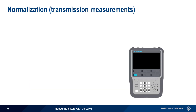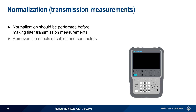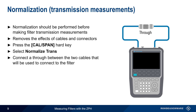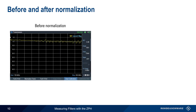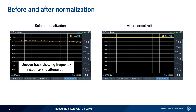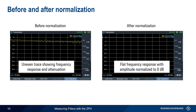A very important prerequisite to any transmission measurement is normalization. Normalization can remove or reduce the effects of cables and connectors on the measurements. To run normalization, press the Cal Span hard key and then Normalize Transmission. A through should be connected where the filter will be attached. After pressing Continue, normalization will complete in just a few seconds. Here is a typical display before normalization — although the tracking generator output is constant, the frequency response and attenuation of the cables will create an uneven or wavy trace. After normalization has been run, the line should be flat and normalized to 0 dB. All filter transmission measurements will now be relative to this level.